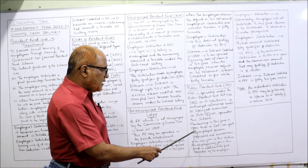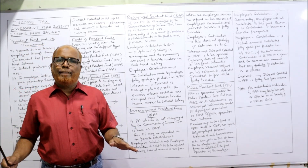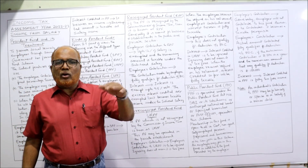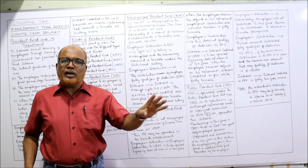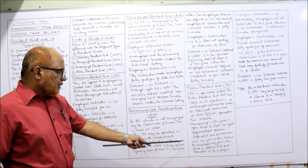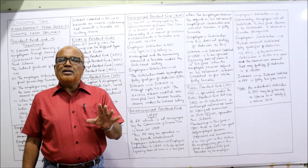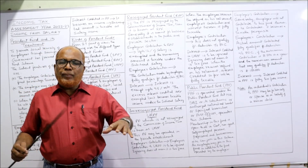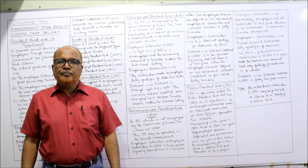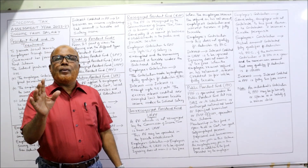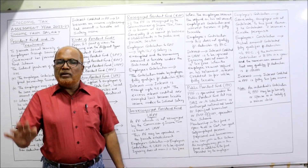Membership is open to all — government employees, non-government employees, self-employed persons, professionals, or businessmen. Any type of person can open a PPF account. An employee may also join PPF in addition to the provident fund operated by the employer; there is no restriction that a person must have only one provident fund.